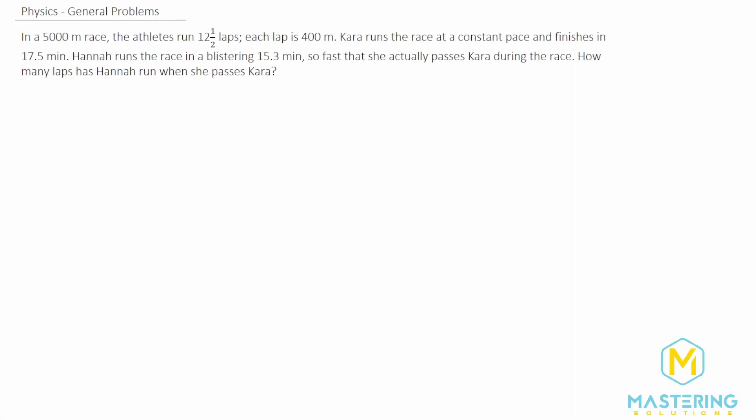Welcome to Mastering Solutions. In this general problem, they tell us that in this 5,000 meter race, the athletes run 12 and a half laps and each lap is 400 meters. Kara runs the race at a constant pace and finishes in 17 and a half minutes.